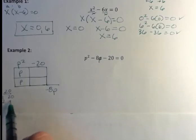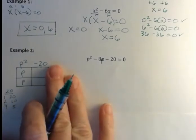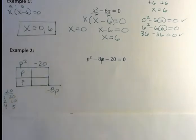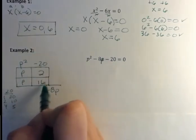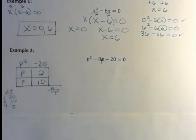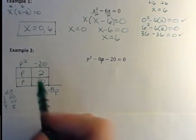I have 1 times 20, 2 times 10, 4 times 5. Which one of those could possibly get me to 8? Well, it's 2 and 10, so I'm going to use 2 and 10. Remember to use a pencil if you're new to factoring so you can try things out.